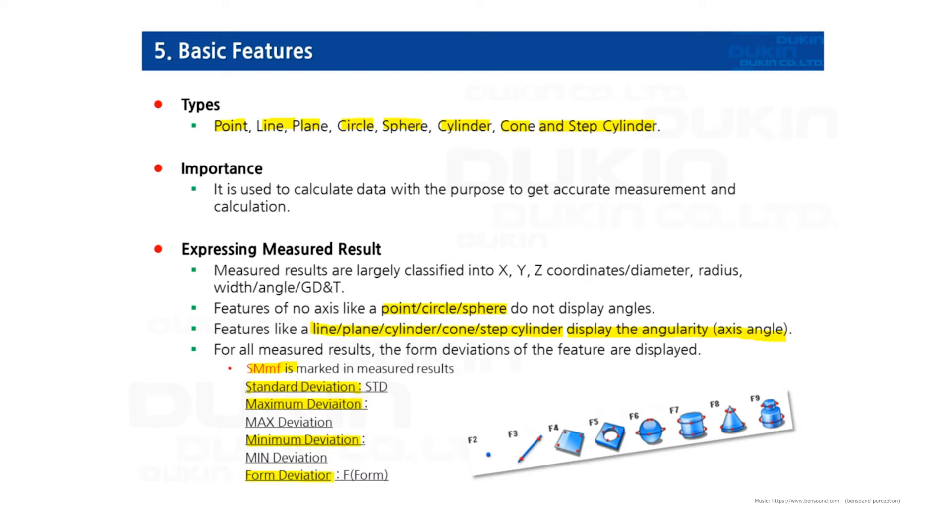And F stands for Form Deviation. The meaning of Form Deviation is a value that indicates how close the feature's shape is to the geometric shape, which means a smaller F value is closer to the geometric shape. So let's take a look at all these basic features in detail.